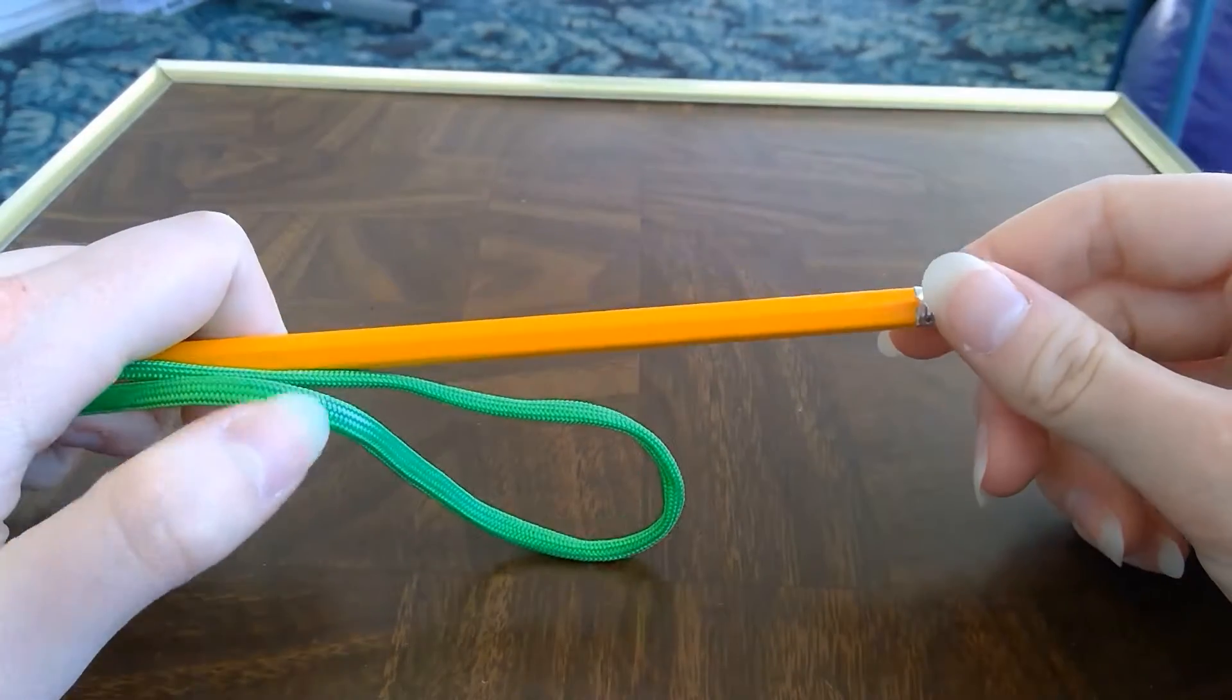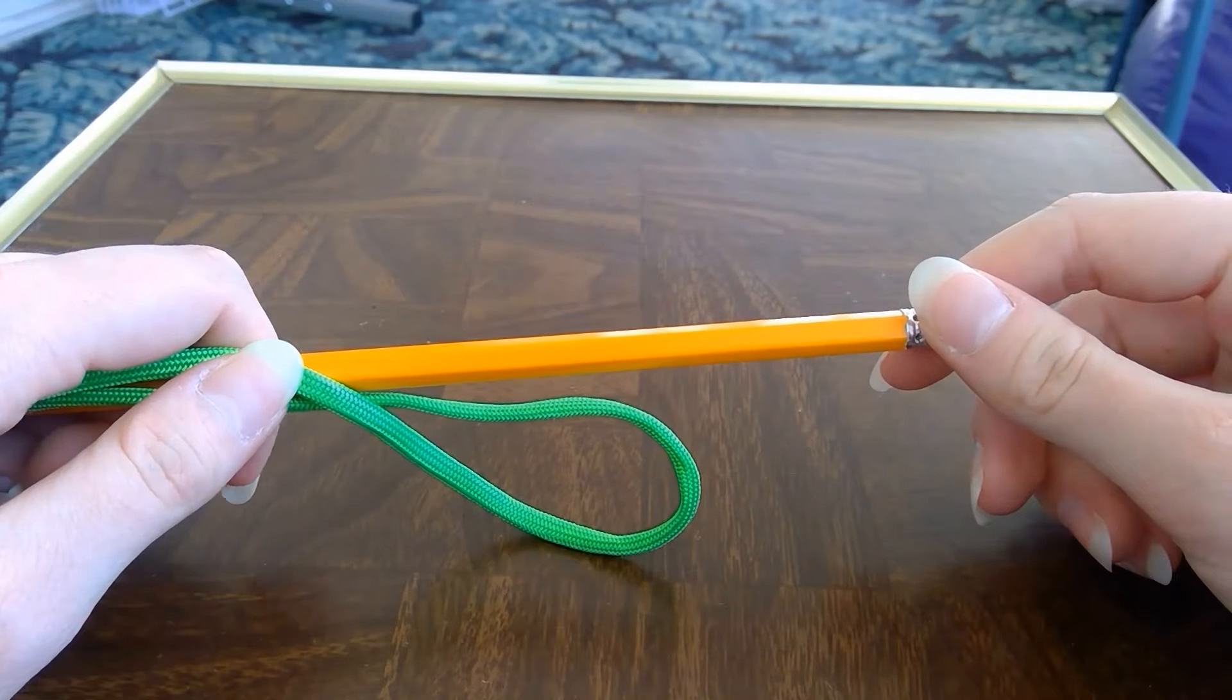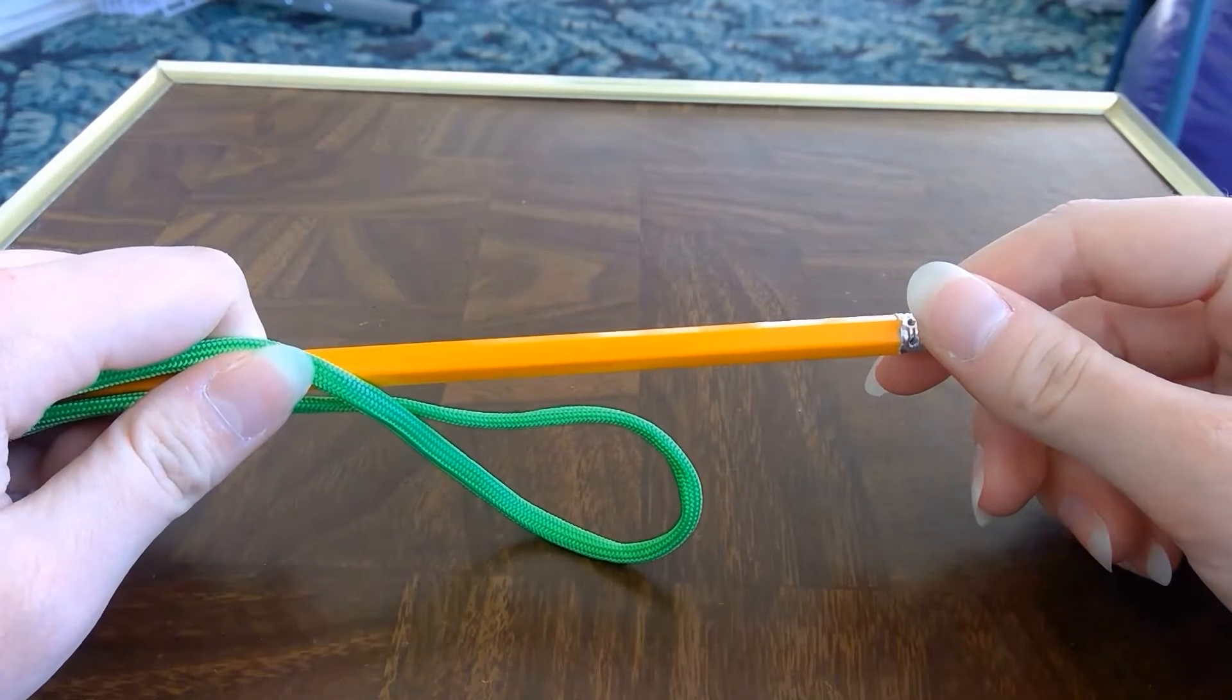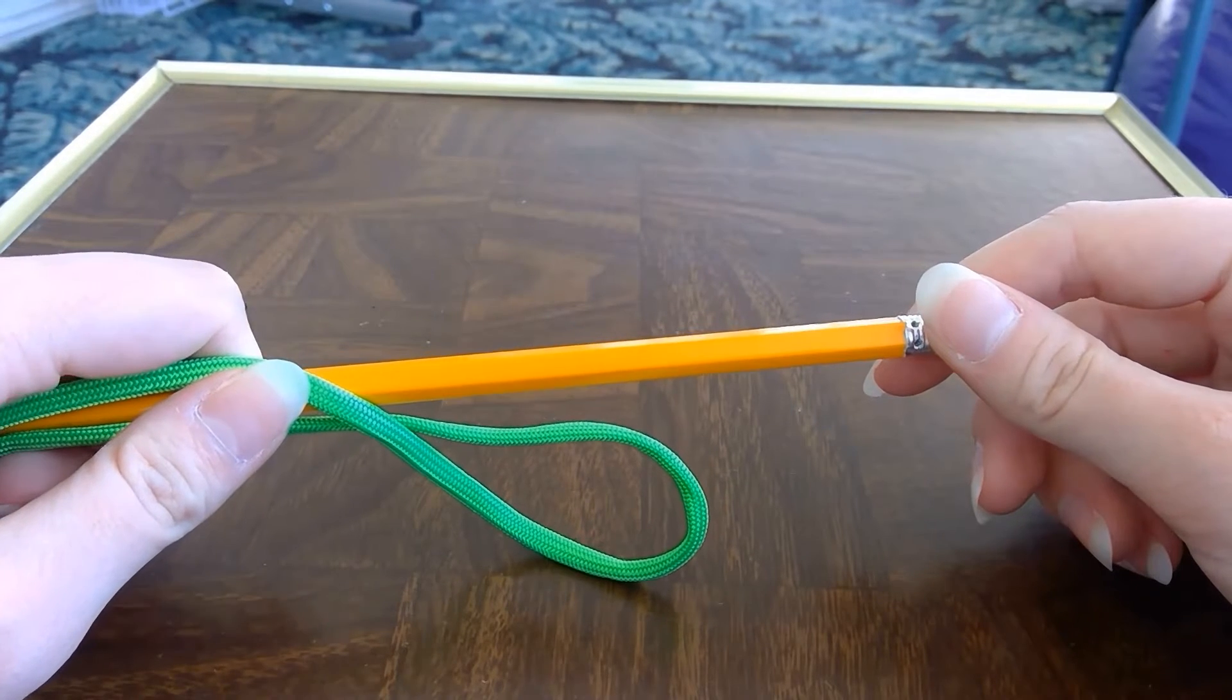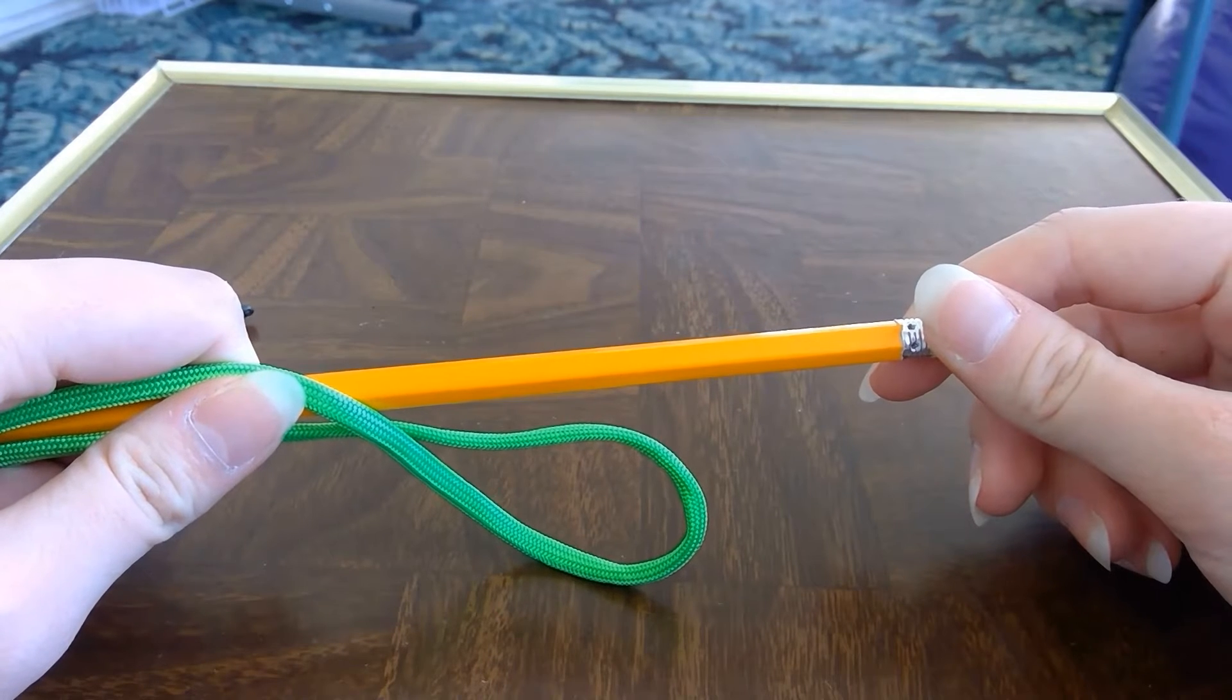This knot is known as the highwayman's hitch. The highwayman's hitch is a quick-release draw loop knot used for temporarily securing a load that will need to be released easily and cleanly.